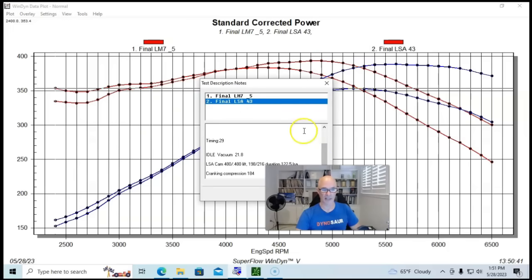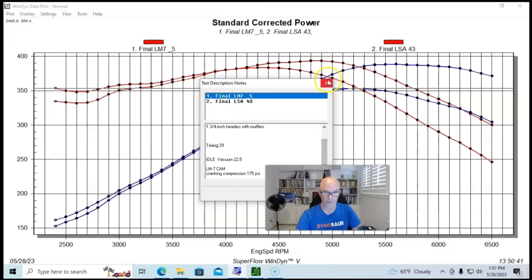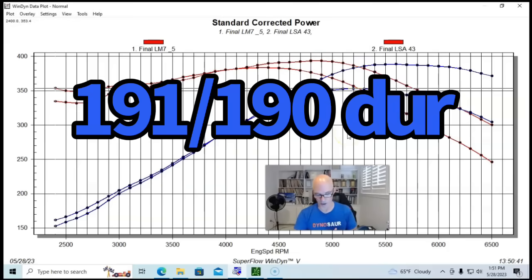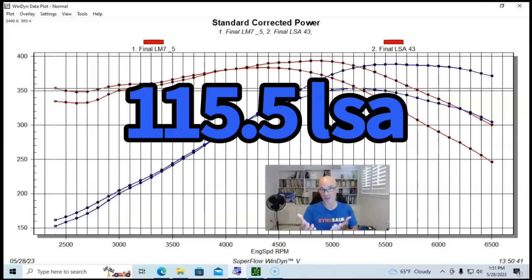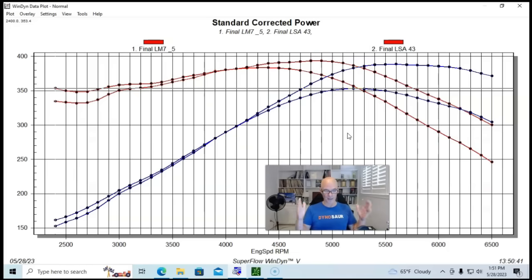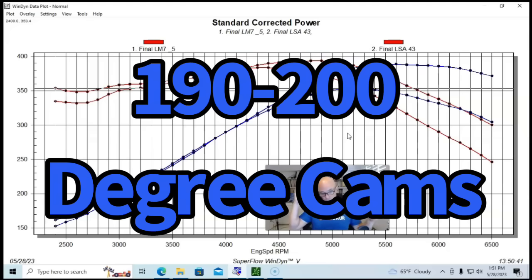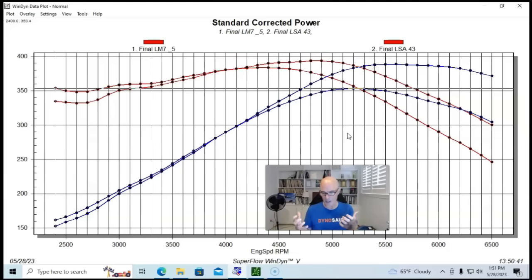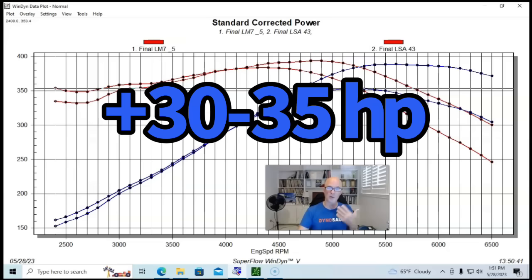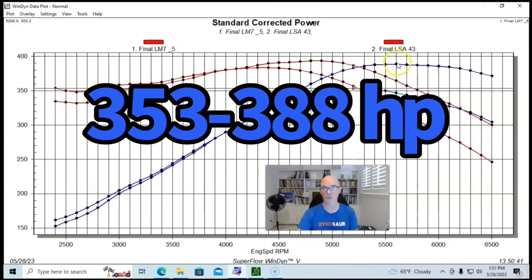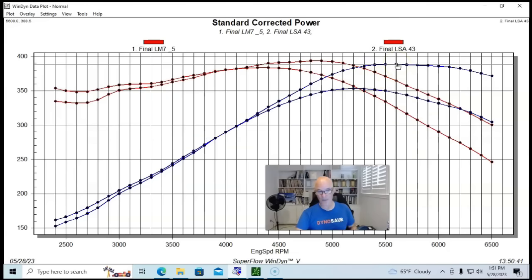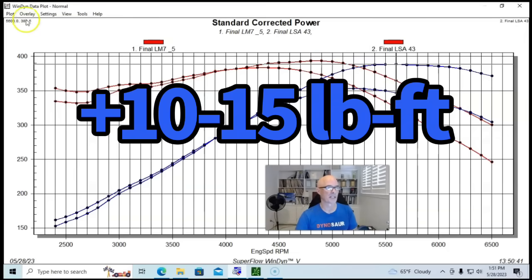The LSA cam checked in at 0.480 lift, both intake and exhaust, 198 and 216 degree exhaust duration split, and 122.5 degree lobe separation angle. That compares to the LM7, which had 190 degrees of intake duration. It's a little bit of a step up in intake duration. What you're looking for when you're looking at cams in this range from 190 degrees at 50 to 200 degrees at 50, you're looking for gains of around 30 horsepower or so. The test went from 353 horsepower up to 388 horsepower. You're looking at not a big gain in torque, usually 10 to 15 foot-pound range.